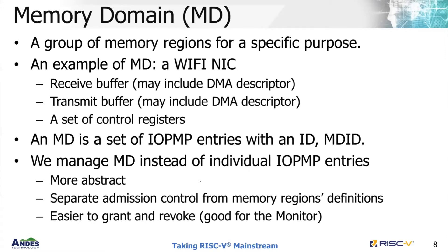Before entering the main structure, I would like to talk about the memory domain briefly. A memory domain is a group of memory regions for a specific purpose. For example, a Wi-Fi NIC may have a trunk of receive buffer, a trunk of transmit buffer, and a set of control registers — these memory regions constitute a memory domain. Every memory domain has an ID, MDID, and is associated with a group of IOPMP entries. These entries define the above regions and their permissions. Software manages memory domains instead of individual IOPMP entries, granting or revoking particular functions to an execution environment, which improves software abstraction.